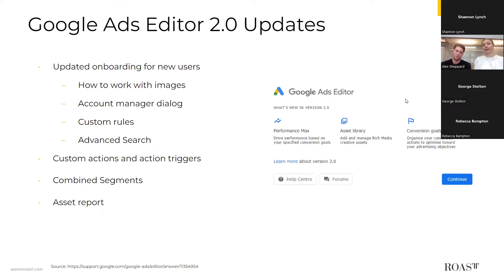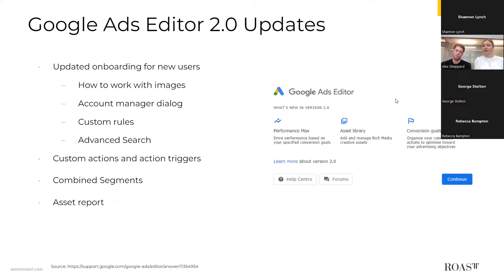Google Ads Editor 2.0 introduces a range of updates that provide advertisers with more capabilities while keeping up with recent Google changes. These include updated onboarding for new users with a sequence of tips covering images, account manager, custom rules, advanced search, and more. Custom actions can be used for frequently repeated tasks such as adjusting bids based on stats, and custom triggers can automatically run actions when a certain event occurs, for example when a customer rule violation is detected. New combined segments offer an easy way to reach unique audiences, and you can download and view an asset report for certain ad types.